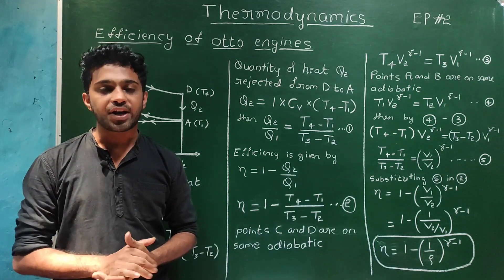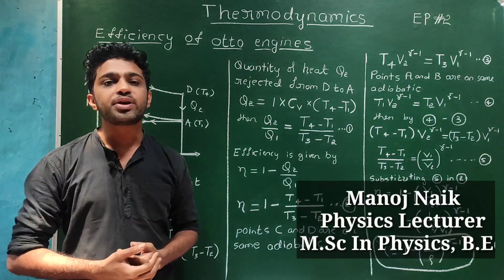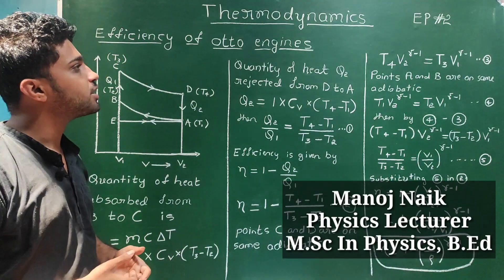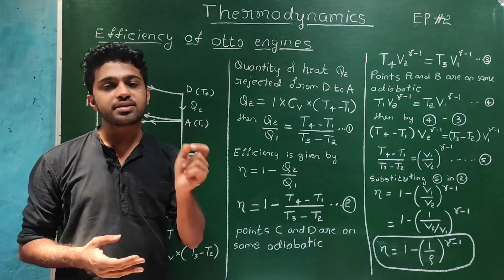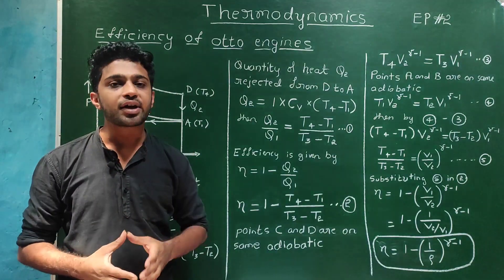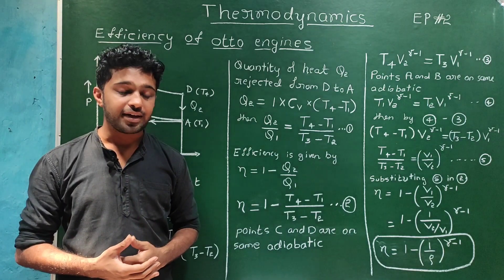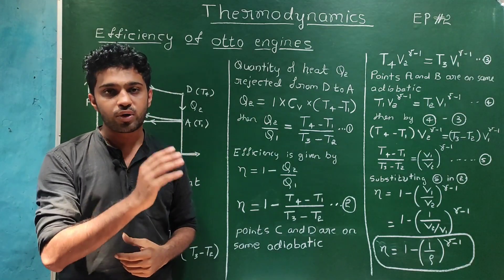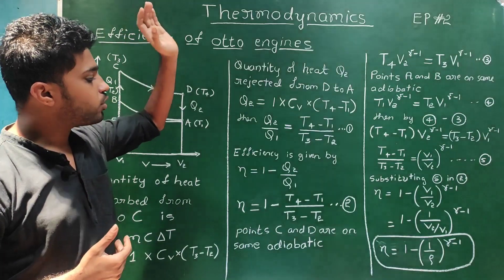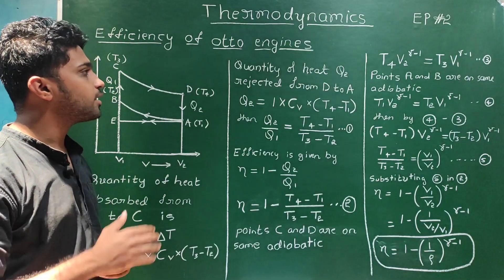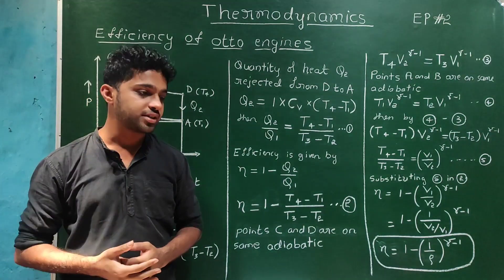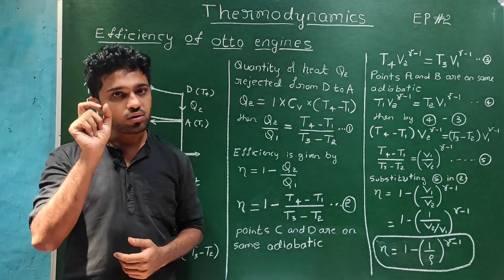Hello, welcome to Educate Light for Life channel. In this video we are going to discuss concepts on the chapter thermodynamics, which is the first chapter of BSc second semester physics according to CBCS syllabus of Karnataka University, Dharwar. In this particular video we are going to derive the equation for efficiency of the Otto engine. In the previous video we studied the meaning of Otto engine and Otto cycle.